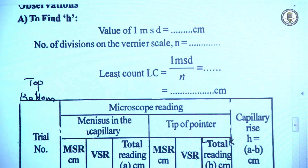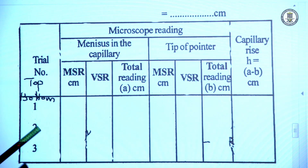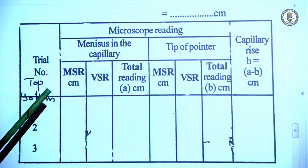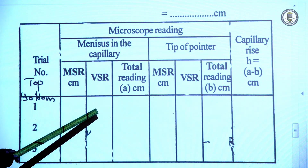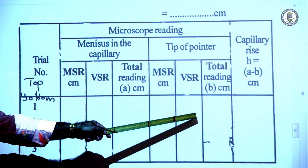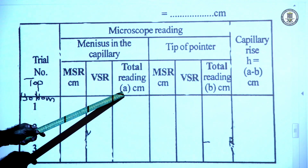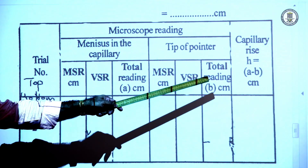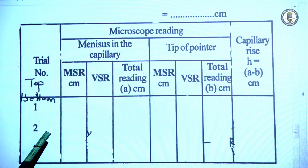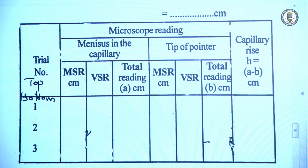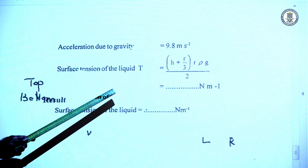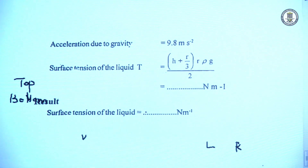We repeat the experiment two or three times. For each trial, we focus on the liquid meniscus and record the main scale reading and vernier scale reading, then focus on the tip of the pointer and record those readings. The liquid meniscus reading is marked as A and the tip of the pointer reading is marked as B, so the capillary rise H equals A minus B. We repeat for different positions of the liquid, determine H each time, and calculate the mean value of H to then find the surface tension.